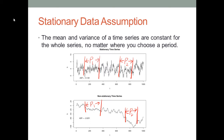No matter which model you plan to choose, the first step is to make sure the time series data follows the stationary data assumption. This assumption believes that a time series data set should have a constant mean and a constant variance throughout the entire time series, no matter where you choose a time period. In practice, the very first step is to draw the time series on a plot chart. If a time series follows the stationary data assumption, it should be pretty flat, with data values changing around a central value, as you can see in the top chart on this slide.